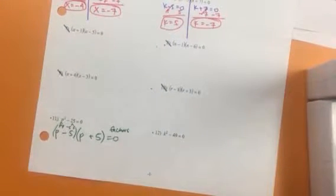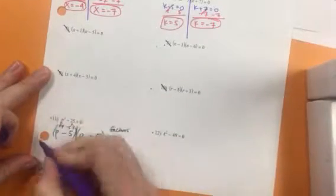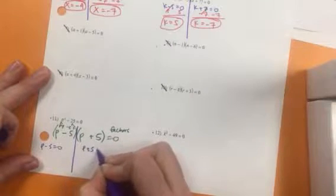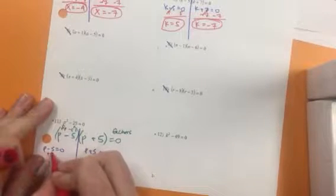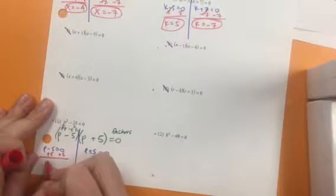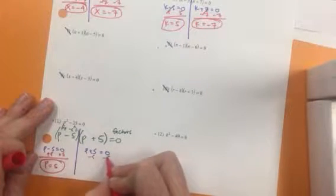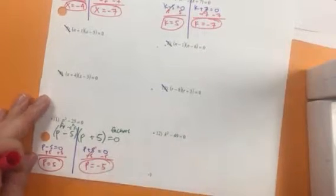Now we get to do what we did just barely. Solve it. So to solve, I set both equal to 0. And now I get p all by itself. So add 5. p equals 5. There's one solution. p equals negative 5. There's our second.